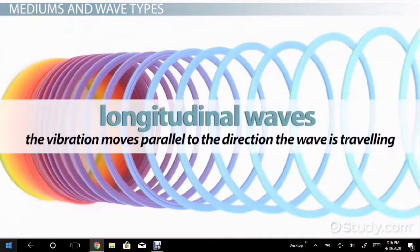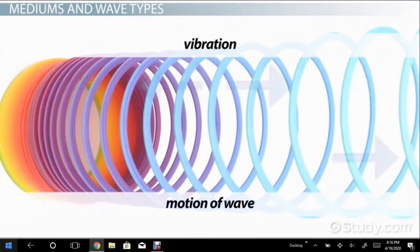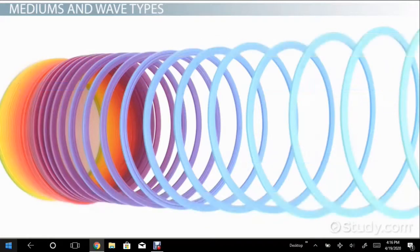Longitudinal waves are where the vibration moves parallel to the direction the wave is traveling. A slinky can help us understand this, because a longitudinal wave can be created by pushing a slinky along its length, sending a pulse across it.